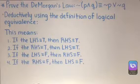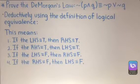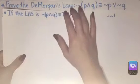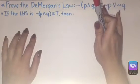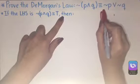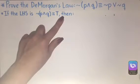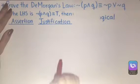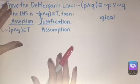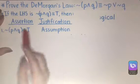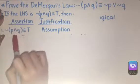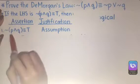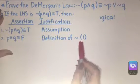We're going to start with the first one: if the left-hand side is true, then the right-hand side is true. We need to assume that the left-hand side is true. If the left-hand side — which is negation of (P and Q) — is true, then we need to see if the negation of P or negation of Q is also true. Our first assertion is that the negation of (P and Q) is true. Next, since negation gives the opposite, if the negation of (P and Q) is true, then P and Q should be false — by definition of negation applied to step one.